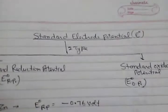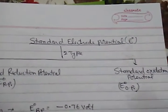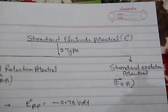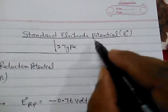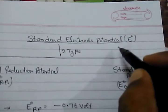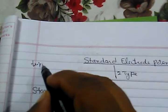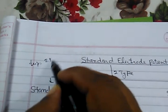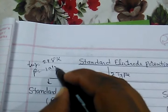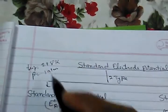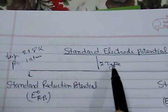Standard electrode potential is measured at certain fixed conditions: the temperature of 298K, the pressure of 1 atm, and the concentration of electrolyte is 1 molar.